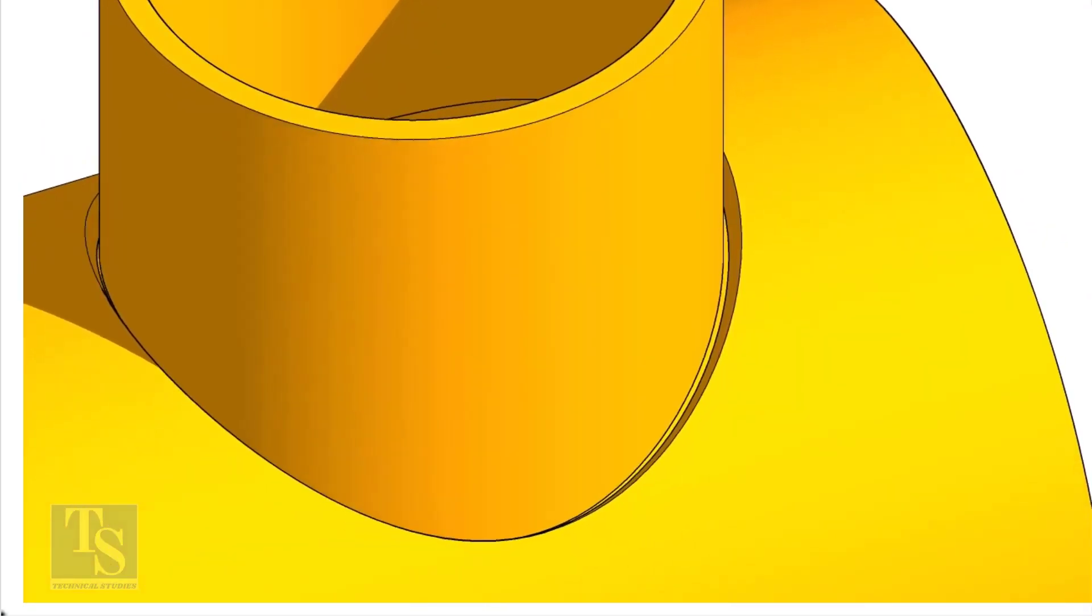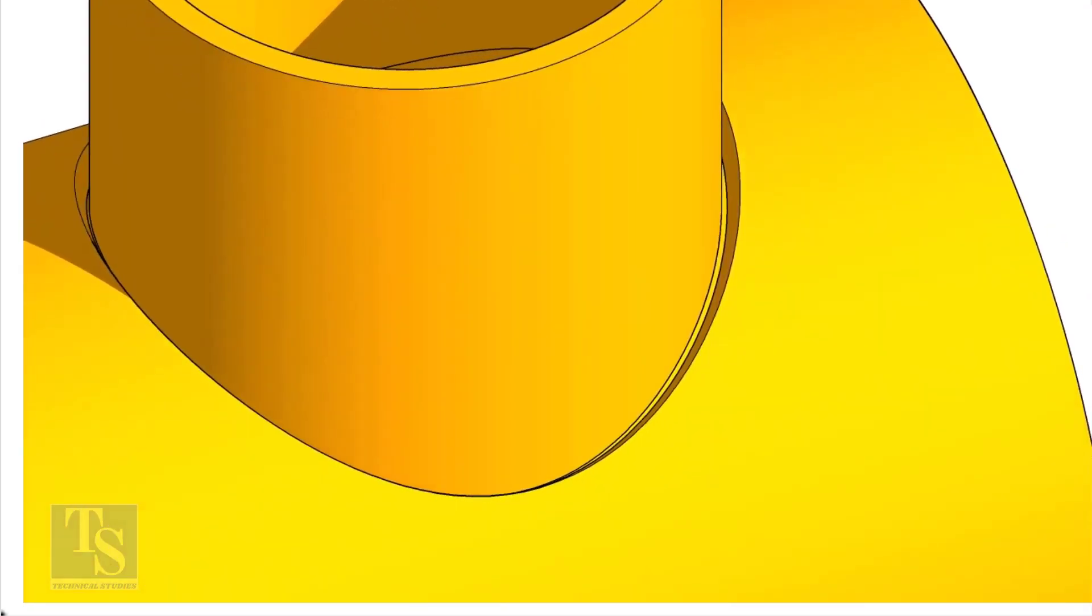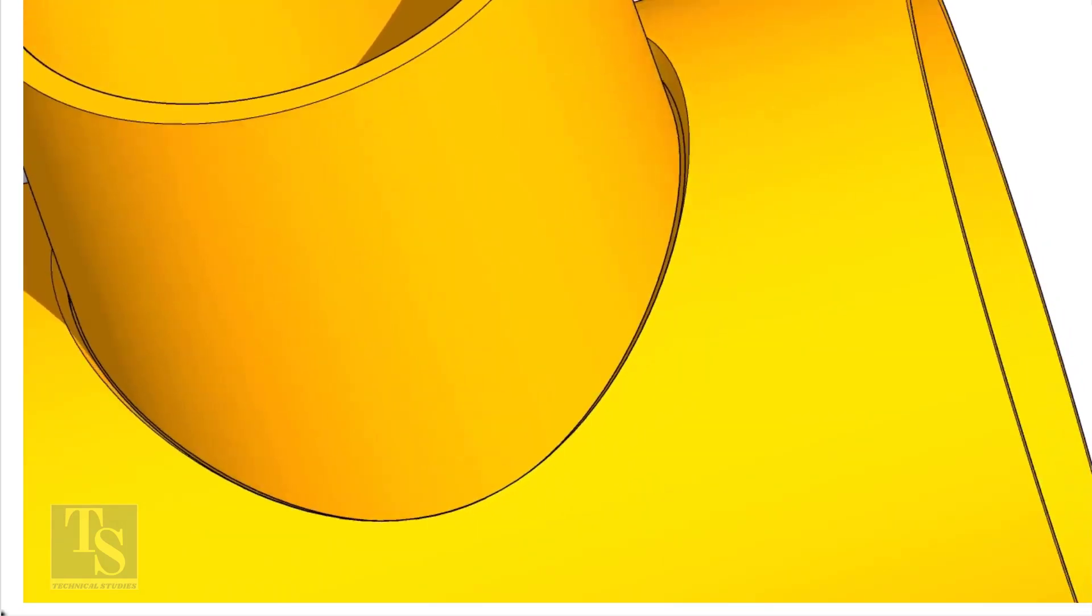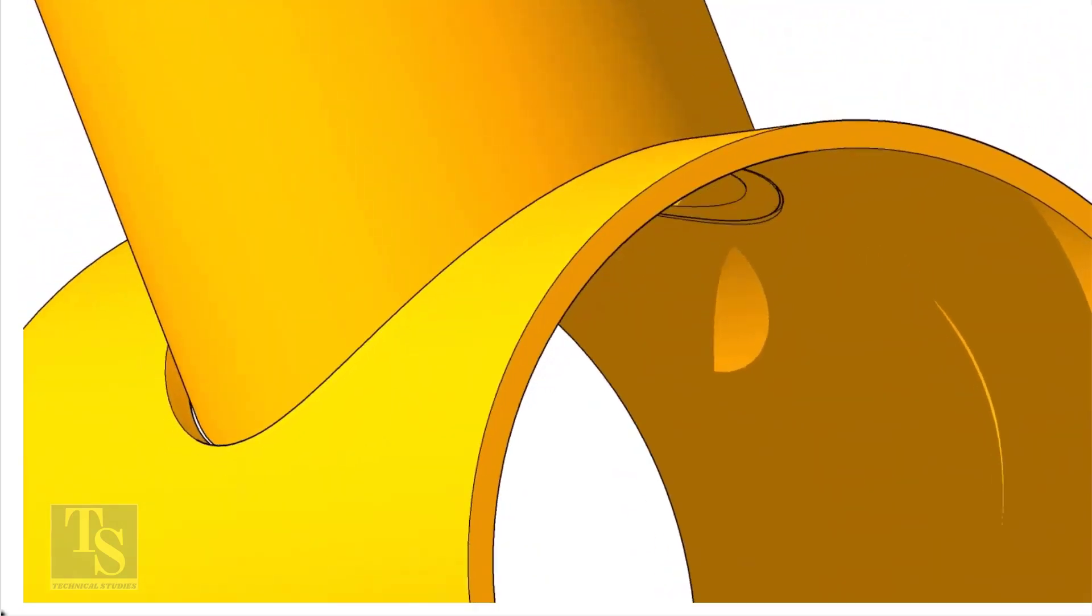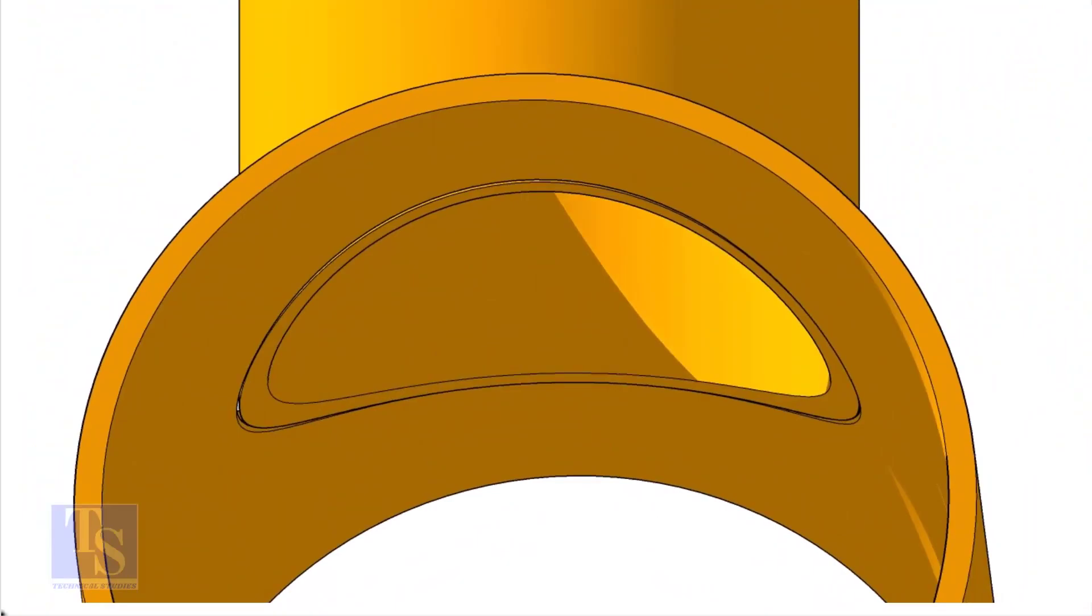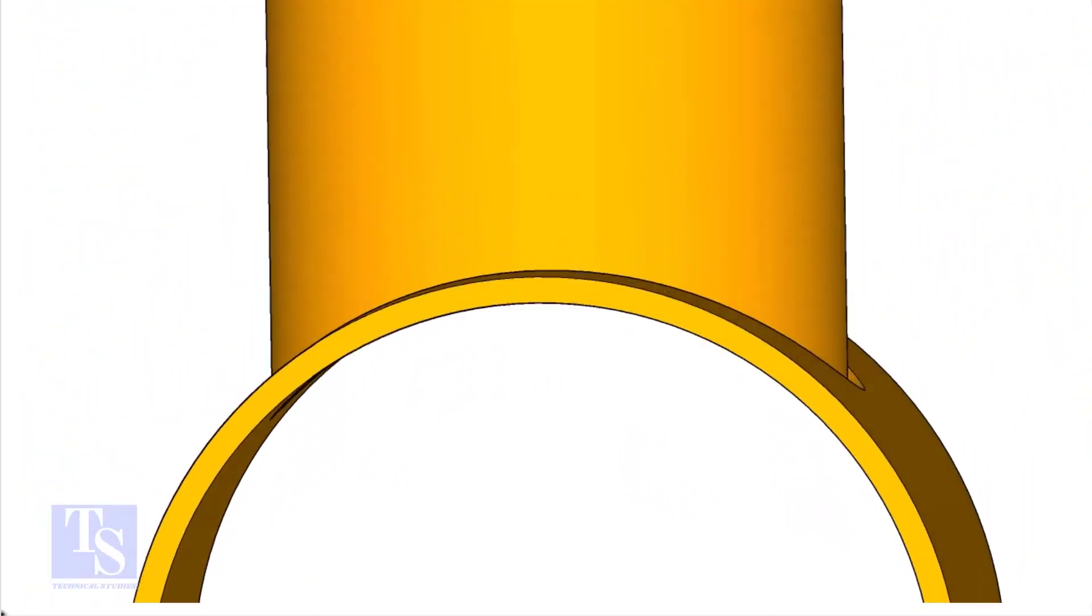On the branch pipe, there is no bevel preparation, but the cut-back cut is done. The end of the branch is level with the inside diameter of the header pipe.